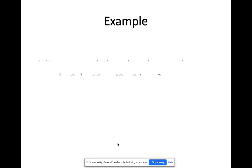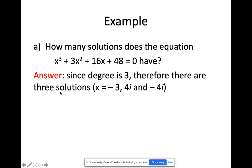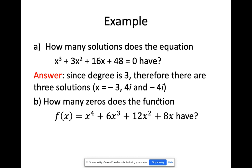The corollary simply states that an n-degree polynomial will have n zeros or n solutions. For example: how many solutions does x³ + 3x² + 16x + 48 = 0 have? Since the highest power is three, there are going to be three solutions. When we solve this, the answers are negative 3, 4i, and negative 4i — so you see imaginary numbers. For letter B: how many zeros does f(x) = x⁴ + 6x³ + 12x² + 8x have? The highest power is 4, so there are four zeros.